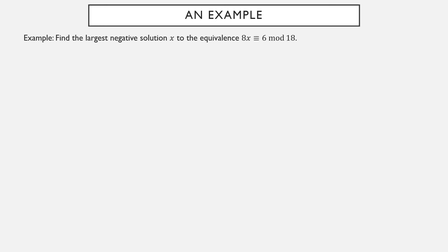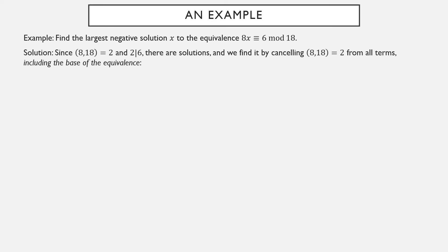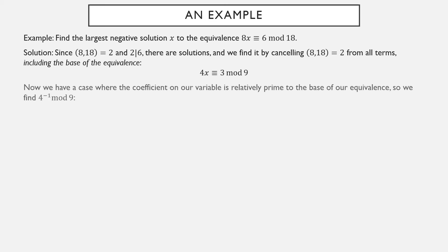Let's work through an example: find the largest negative solution to 8x ≡ 6 mod 18. The first thing we check is whether solutions exist. The coefficient 8 and the base 18 have greatest common factor 2, which is indeed a factor of 6. Since 2 is a factor of all terms including the base, we cancel it out to get 4x ≡ 3 modulo 9. Now 4 is relatively prime to 9, so we compute its inverse: 4 times 7 is 28, which is one larger than a multiple of 9, so 4 inverse ≡ 7 mod 9. Multiplying both sides by 7 cancels the 4, giving 21 on the right. So any solution is equivalent to 21 modulo 9, and conversely anything equivalent to 21 mod 9 solves 8x ≡ 6 mod 18.